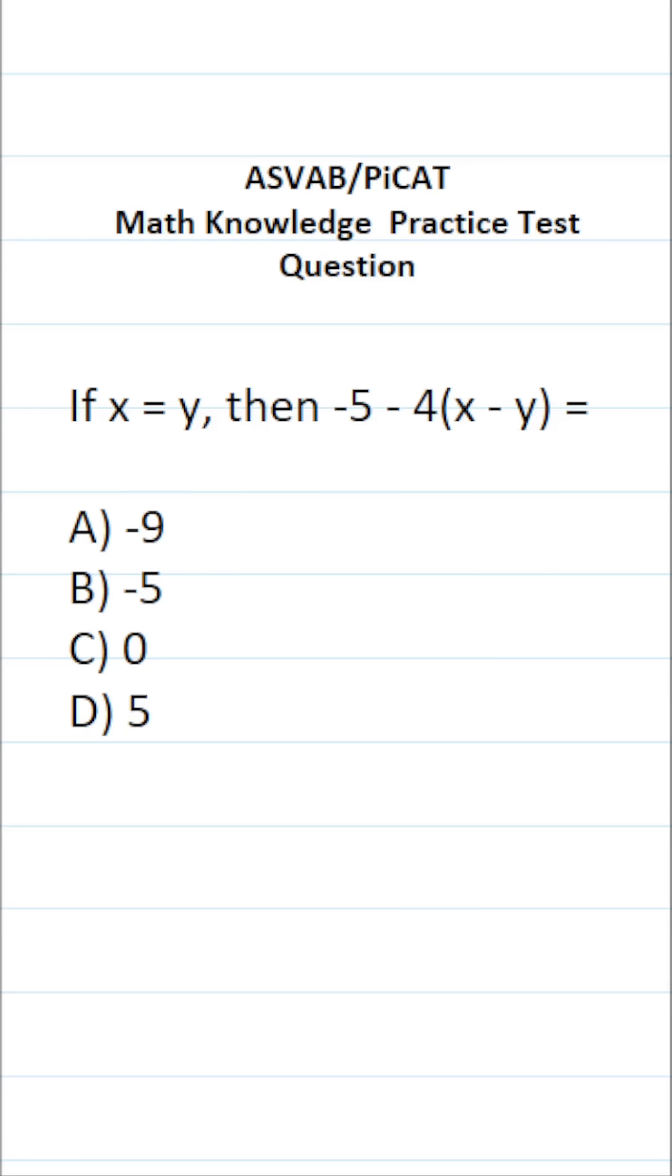This math knowledge practice test question for the ASVAB and PiCAT says: if x equals y, then -5 - 4(x - y) equals what? On the ASVAB and PiCAT, you're not given a reference sheet or a calculator.